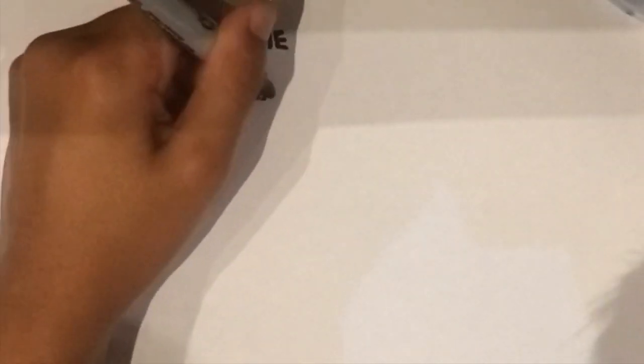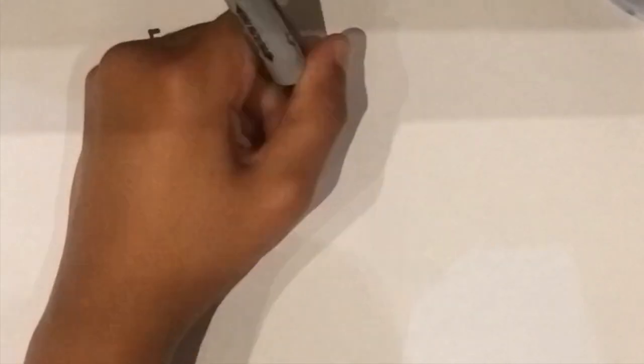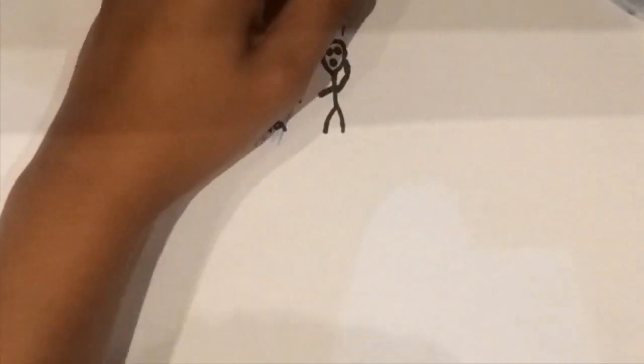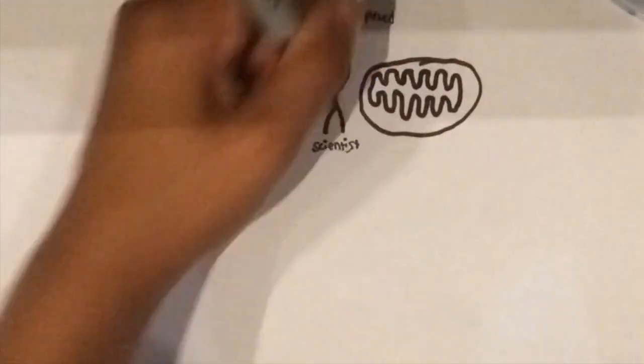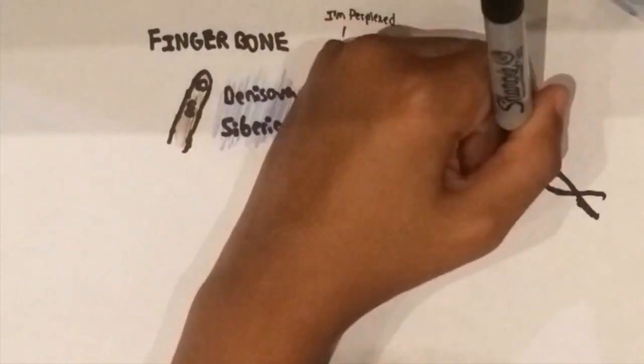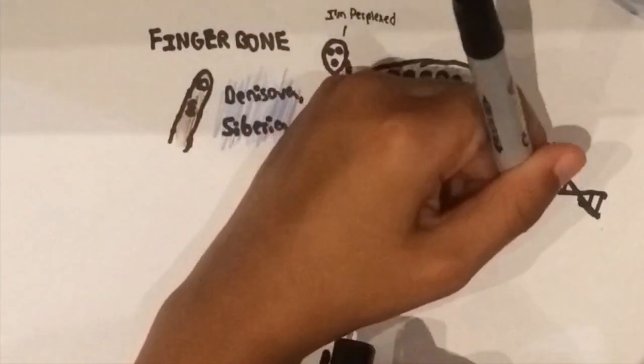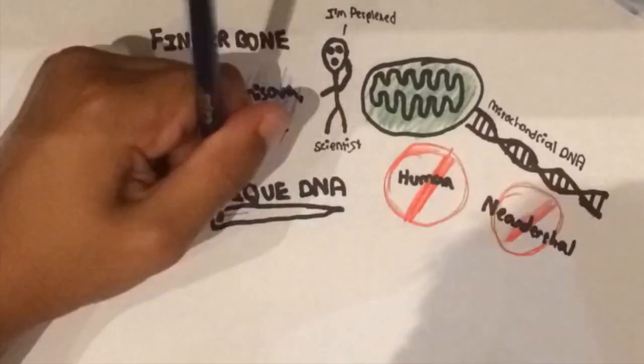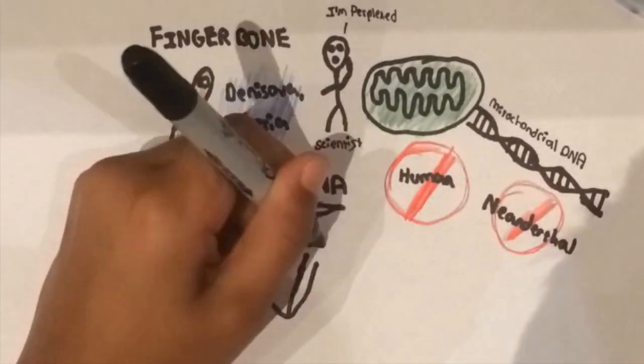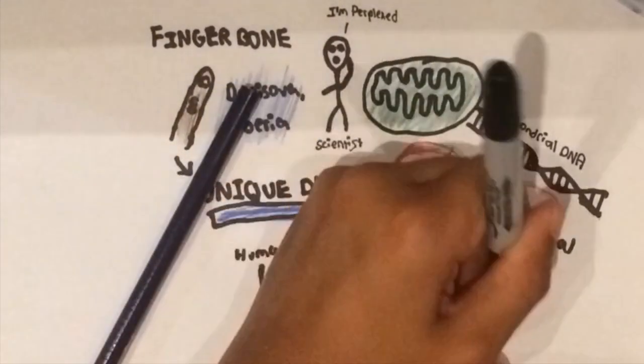In the 2000s, a new finger bone discovered in a cave called Denisova in Siberia shocked the world of scientists with a perplexing puzzle. The sequence of mitochondrial DNA found in the finger bone was unique. Not human, nor Neanderthal, but a completely different branch of the family.